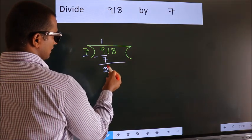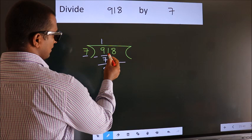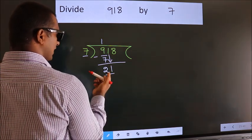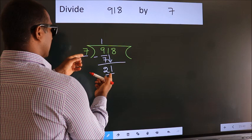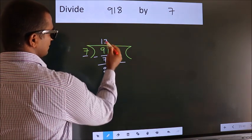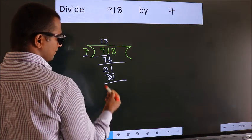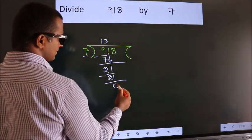After this, bring down the beside number. So 1 down. So 21. When do we get 21 in 7 table? 7 3s 21. Now we subtract. We get 0.